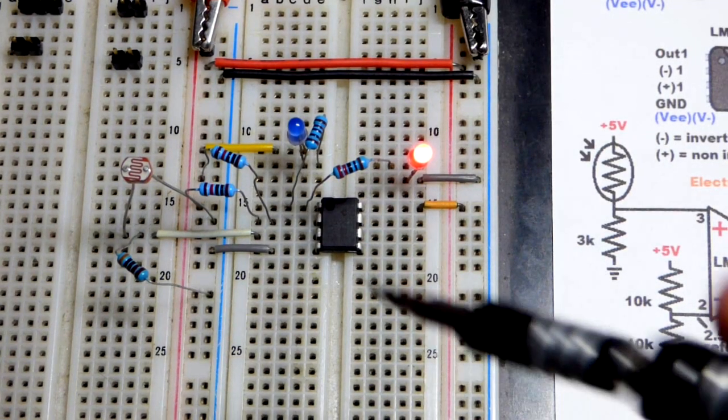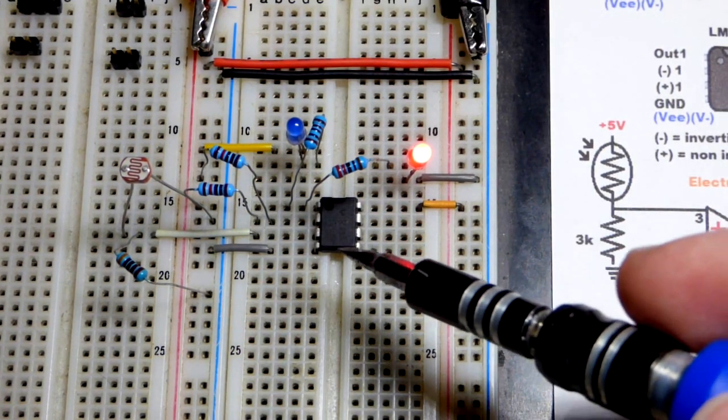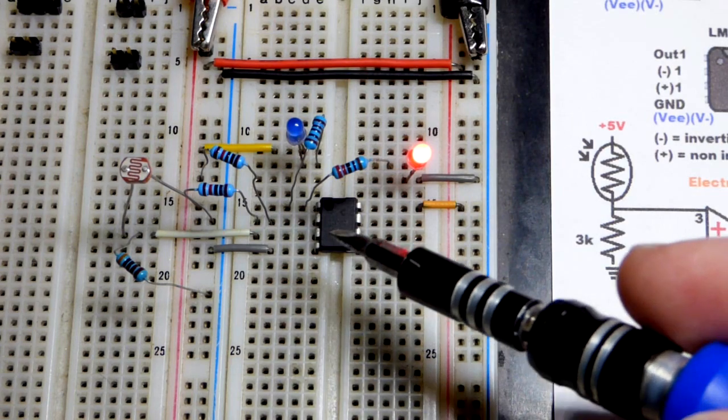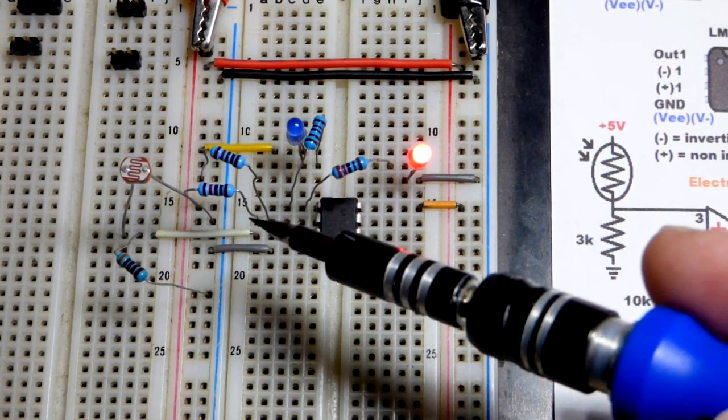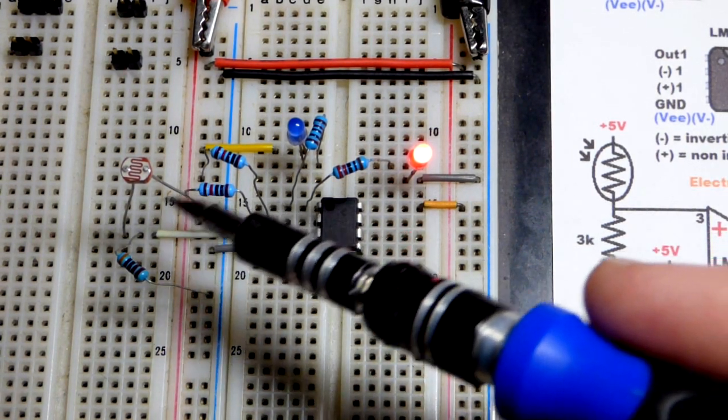So now in this video we improved the comparator circuit. It's the non-inverting comparator. We're using an op-amp though, but in case we set a reference voltage at 2.5 volts.